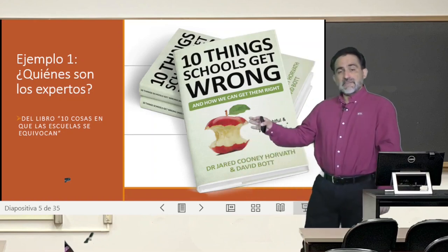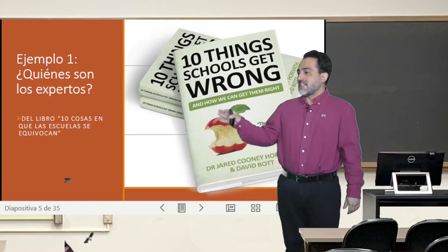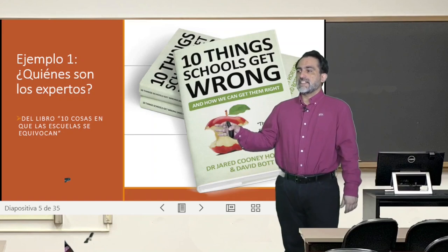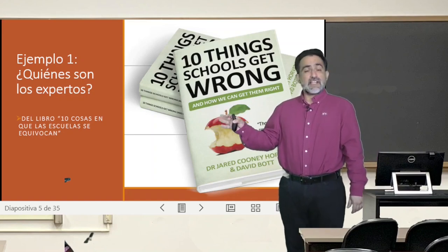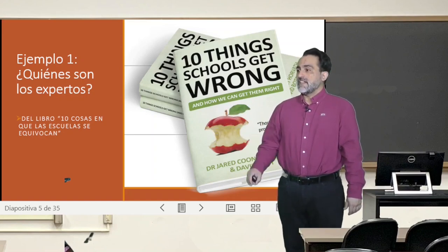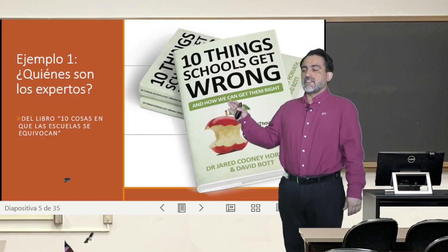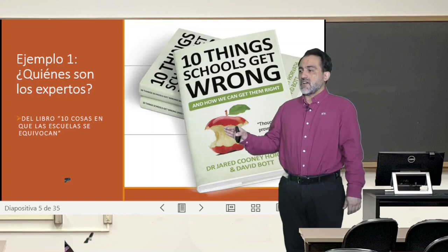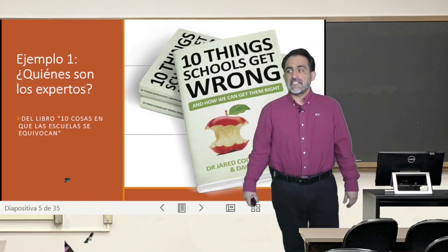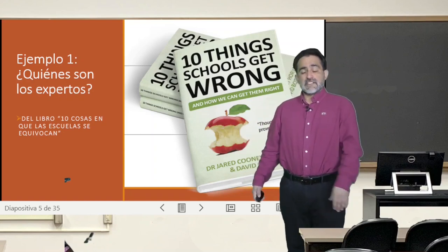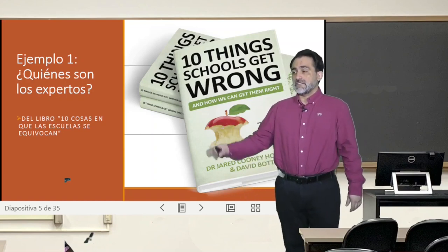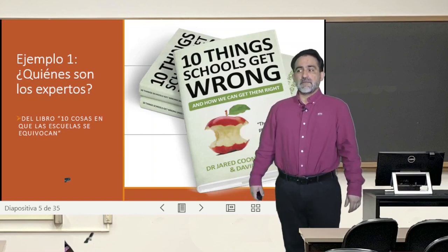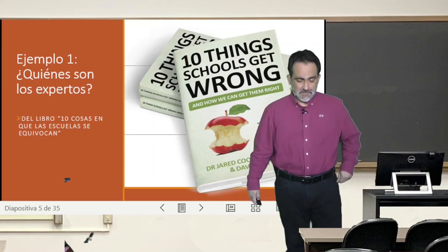And that is very well described in this book called 'The 10 Things That Schools Are Wrong,' by Mr. Jared Cooney Horvath and Mr. David Bott, both of whom are Australian and are more or less well-known authors.